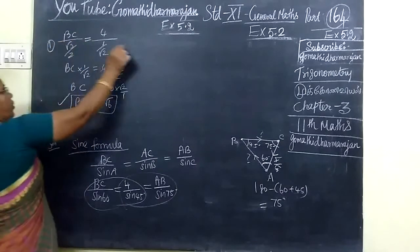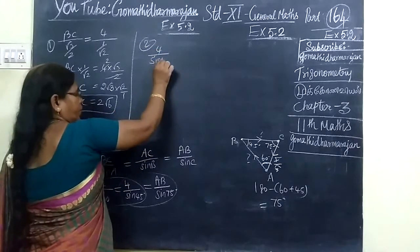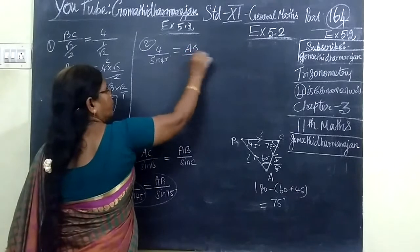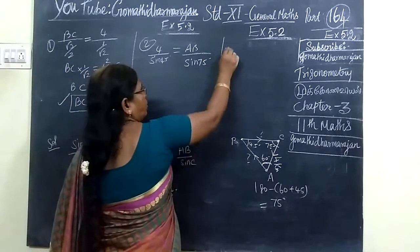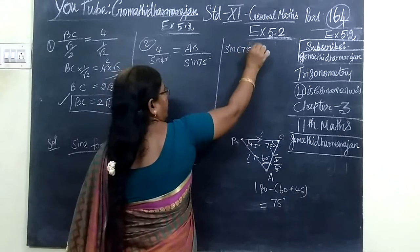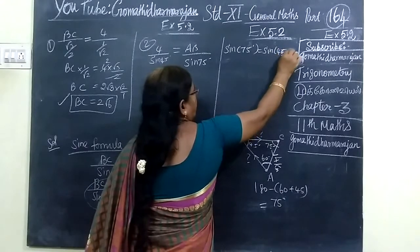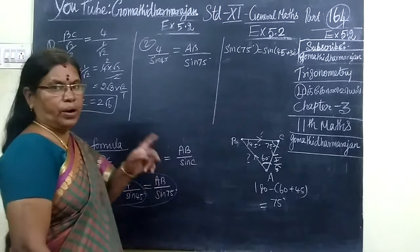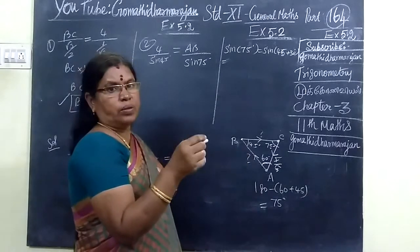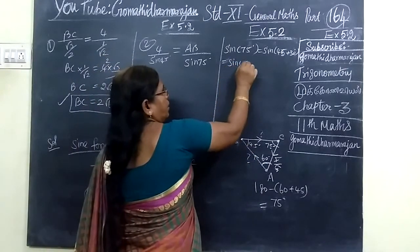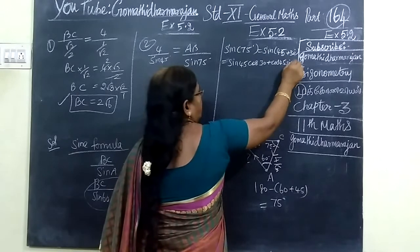After this, now we will go to the second step. So 4 by sine 45 equal to AB by sine 75. If we know that sine 75 is unknown, known angle split. Sine 45 plus 30. Or unknown angle, known angle split. So sine A plus B, sine A cos B plus cos A sine B. So sine A then cos B plus cos A then sine B.